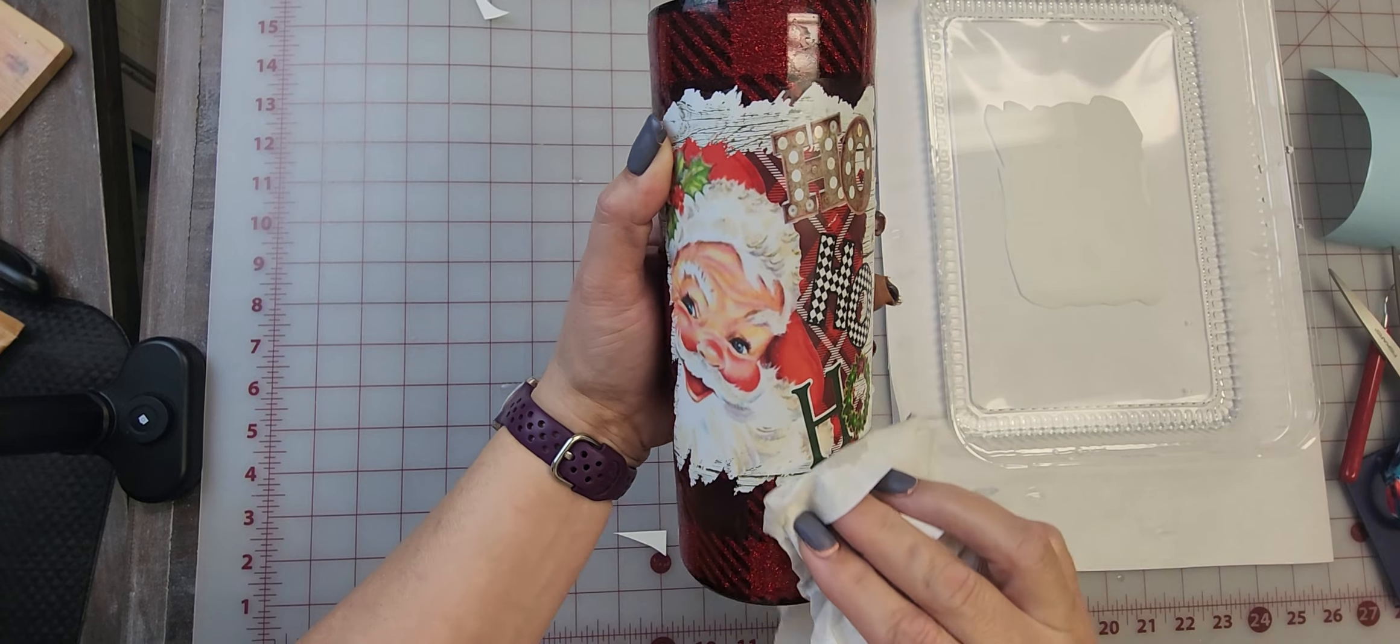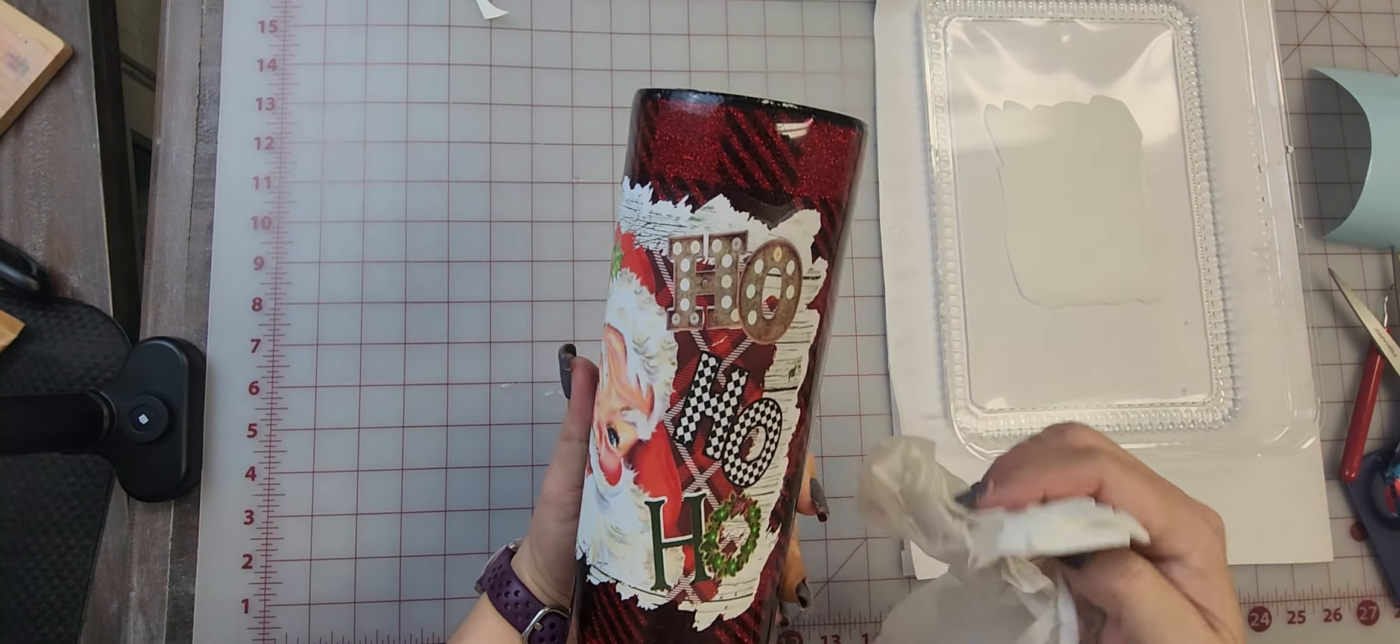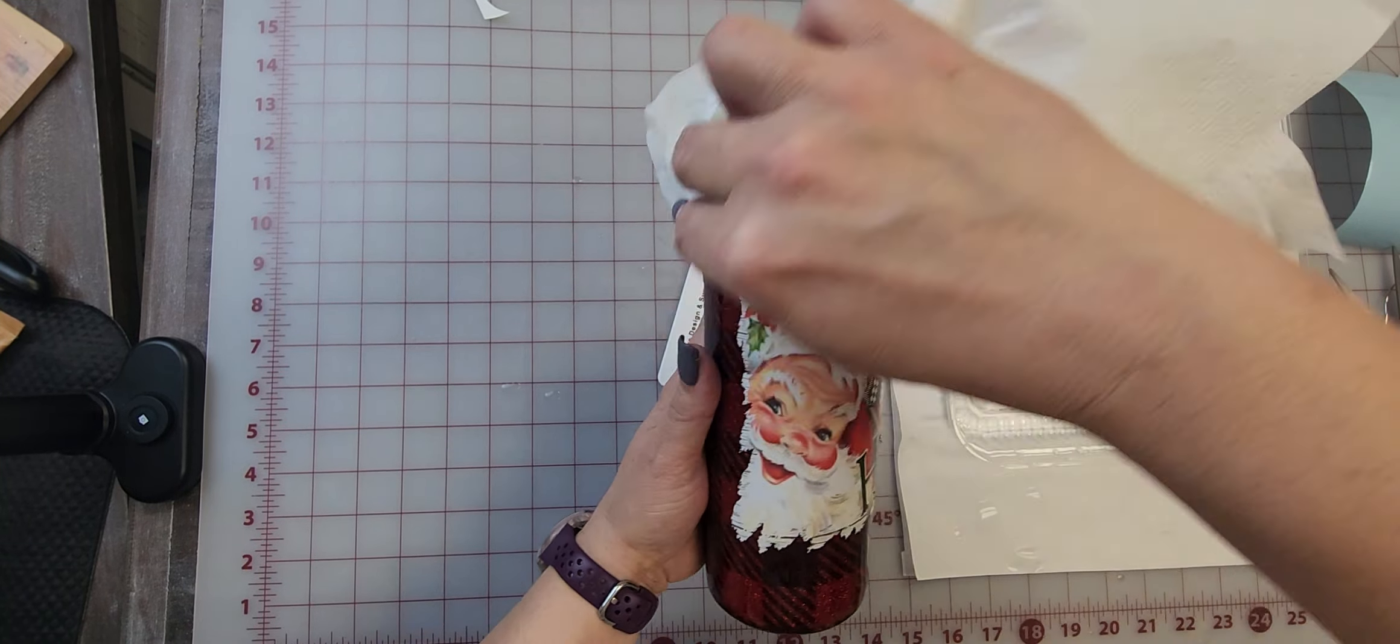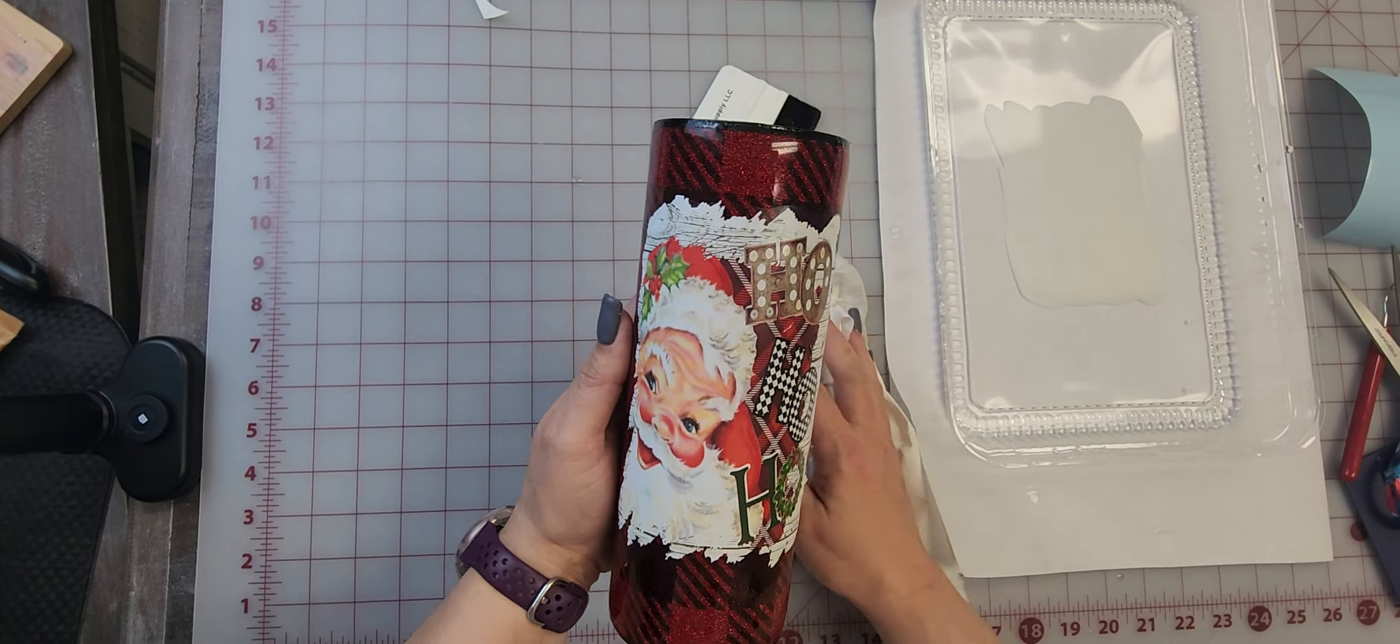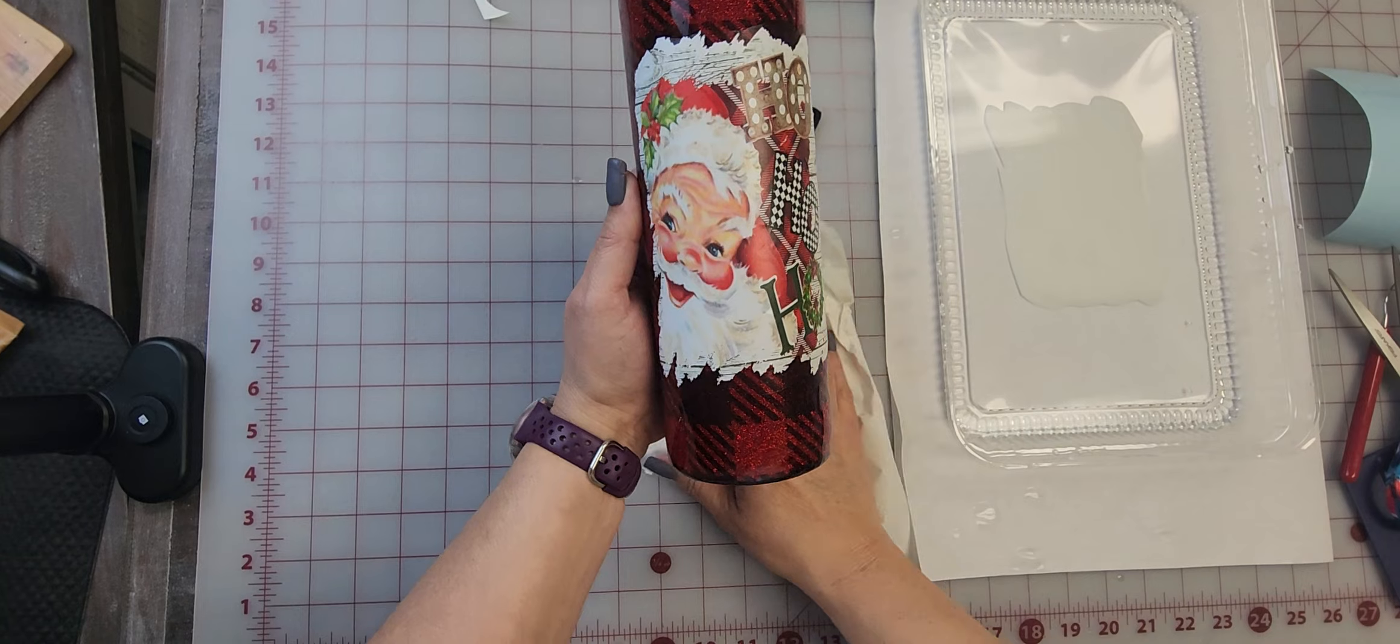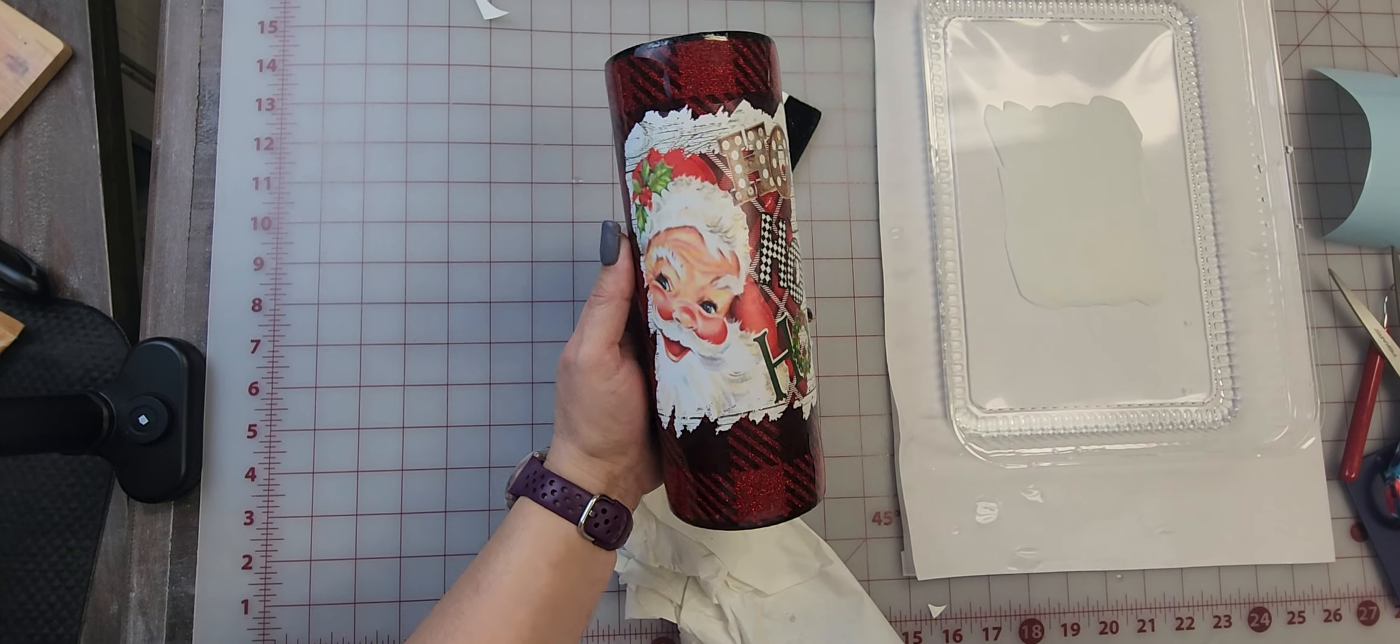And I do let this dry for 24 hours and then I will put the final coat of epoxy on it. I hope that helps someone. If you have any questions, comment below. And I really like the way this matte sealer worked on this. Like always, if you have any questions about this, you can comment below and I will be glad to help you with them. Thank you.